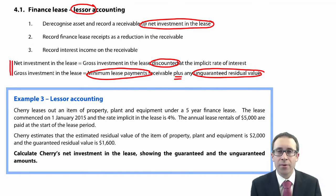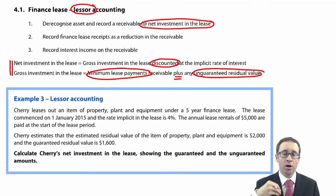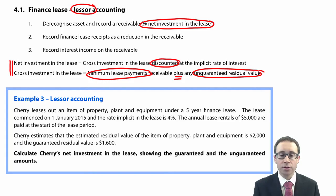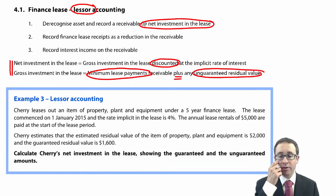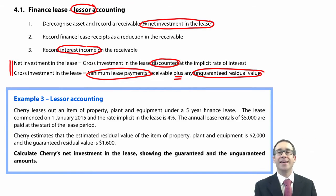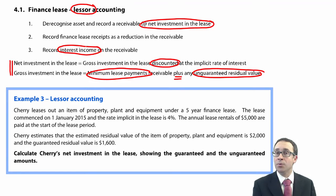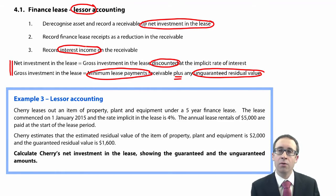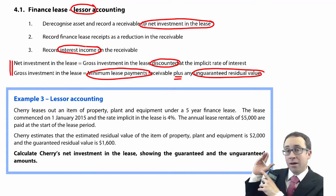Once you've done one or two questions you should be reasonably okay. If there is any difference between the value of the asset and the amount you record as a receivable, that goes immediately to profit or loss. So you're crediting the PPE, debiting the receivable with the net investment in the lease, and any difference goes to profit or loss. In an ideal world they will both be equal. You then record the cash receipt — debit bank, credit the receivable — and record interest income at the rate implicit in the lease. There are only three steps because we no longer have the asset and do not need to depreciate it.